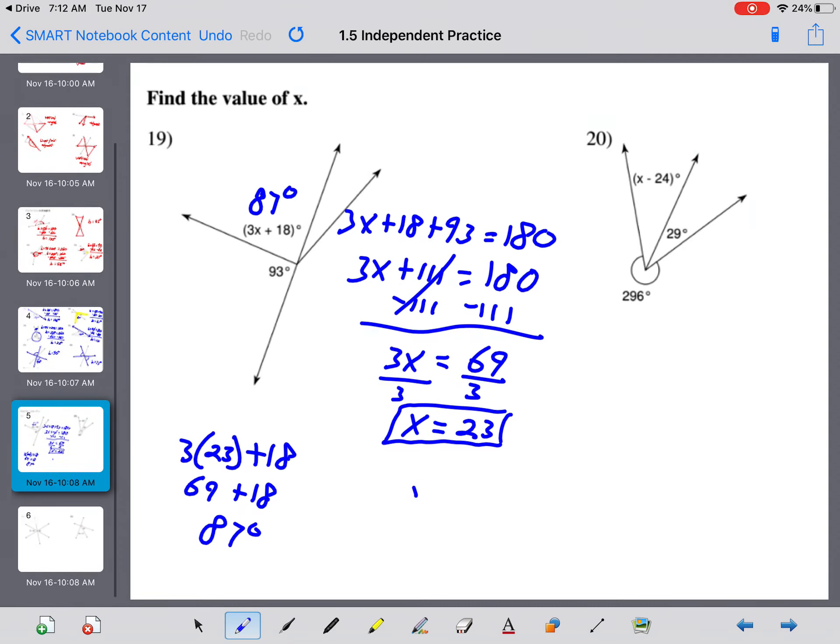Third to last one. Here, we have 360 degrees. So x minus 24 plus 29 plus 296 equals 360. So let's combine our like terms. 296 plus 29 minus 24. When we combine those three, we get 301. So x plus 301 equals 360 minus 301 on both sides. x equals 59.